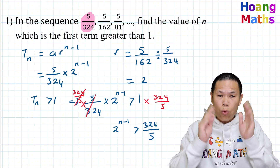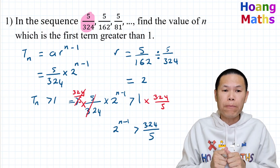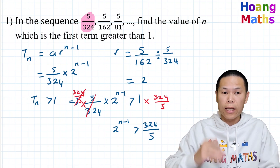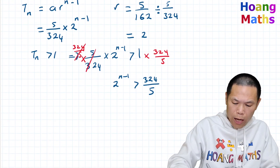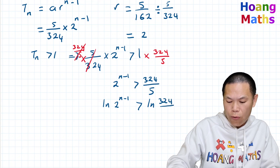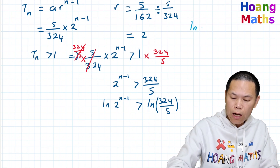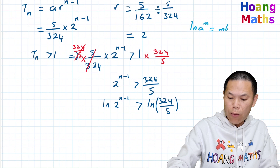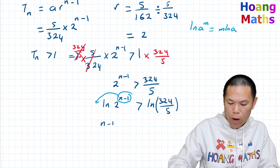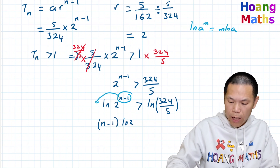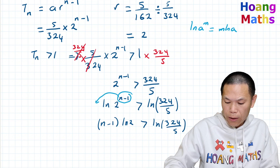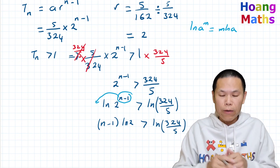Now to solve this, I take log on both sides. It doesn't matter whether we take log base 10 or natural log — in this case I'll use ln. So ln(2^(n−1)) > ln(324/5). Using the log law, ln(a^m) = m·ln(a), we bring the index to the front: (n−1)·ln(2) > ln(324/5). Then I divide both sides by ln(2), giving n−1 > ln(324/5) / ln(2).